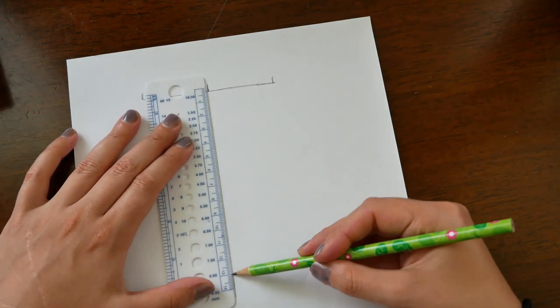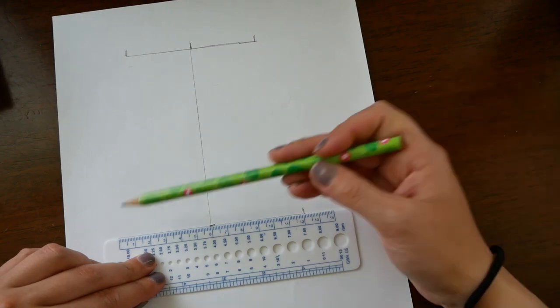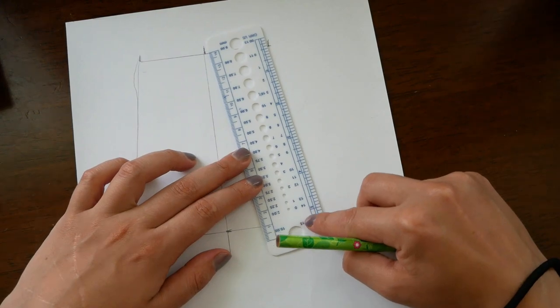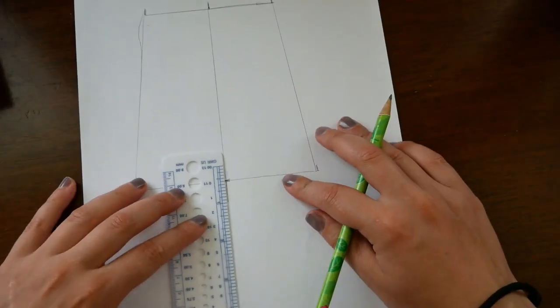Then I measured a line with the value of the bust and constructed a perpendicular exactly in the middle of this line. Then I measured the height between the bust and the hips and I applied this value to the perpendicular. Here make another line with the value of the hips.